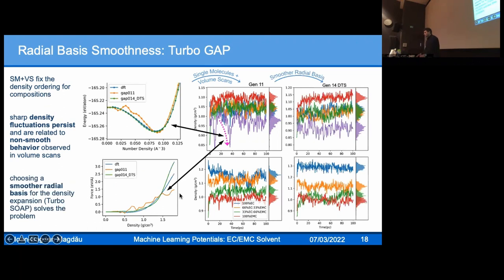We bring in this cousin of GAP, turbo GAP, that employs turbo SOAP. It's basically exactly the same settings, just uses a different radial basis. We see much smoother behavior for the EV curves, much smoother behavior for the forces, and many of these issues are fixed in the dynamics. There's no more density excursions, and these densities now appear to be well converged.